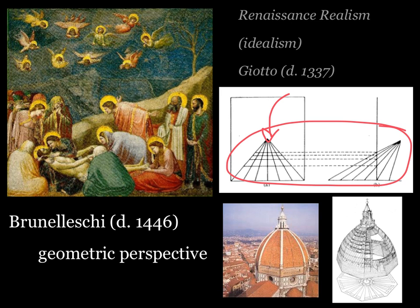What Brunelleschi is best remembered for, however, is completing the Dome of the Duomo, the Florentine Cathedral. He spent years studying Roman domes and developed a theory for constructing the dome without expensive wooden scaffolding. With the support of the Medici family, Brunelleschi won the commission and began construction in 1419, finishing in 1434. The dome is an engineering marvel due to the ingenious use of two different ways of laying brick. It had to mimic the end of an egg rather than a true half-sphere, distributing the weight more easily — creating the largest dome built since the Roman Empire.